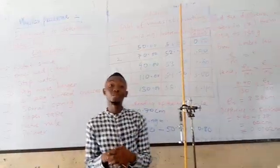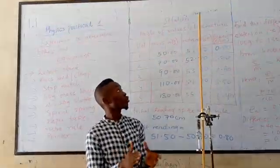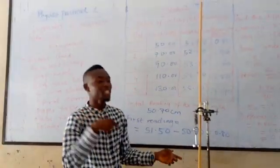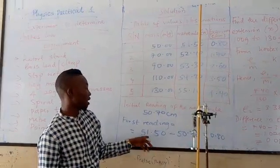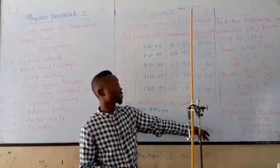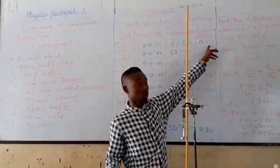So for us to now get the extension that is produced, we are going to subtract when a mass of 50 grams was hanged from the initial position of the pointer. And when we subtract, we are having 51.50 minus 50.70, we are having 0.80. So we will record it here, 0.80.